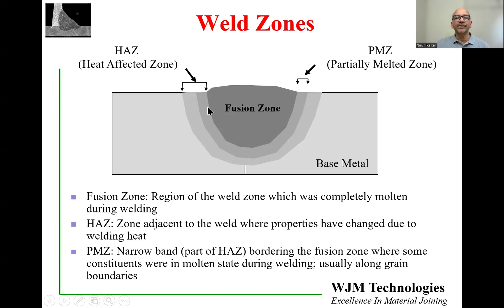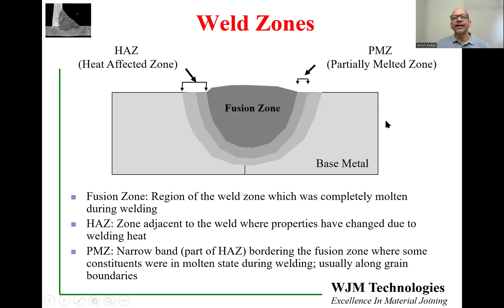The heat affected zone is where the properties of materials have changed, and that can include mechanical properties, electrical properties, corrosion, fatigue — any of the properties could be affected. The heat affected zone itself can have various different classifications within it, but the one we are interested in today is the partially melted zone, or the PMZ.